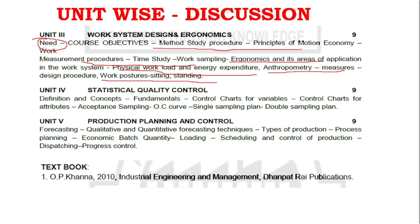For unit four, focus on control charts — control charts of variables and control charts of attributes — and the operating characteristics curve, which is very very important. Covering these three areas will make unit four easy to attend. Even if a Part C question comes from one of these three areas, you will be well prepared.